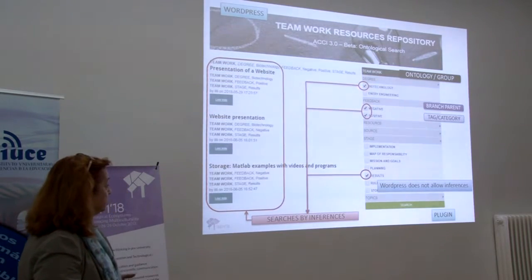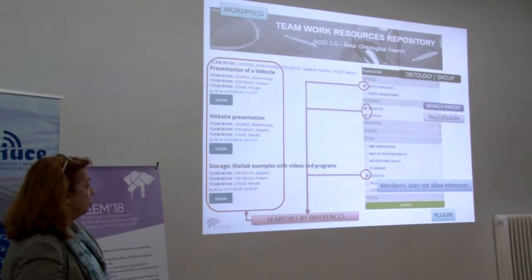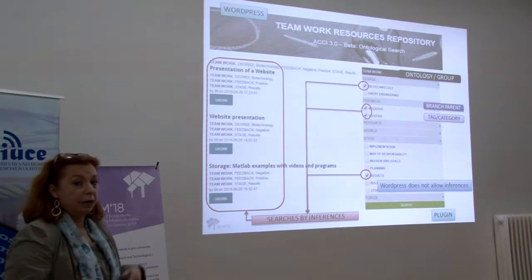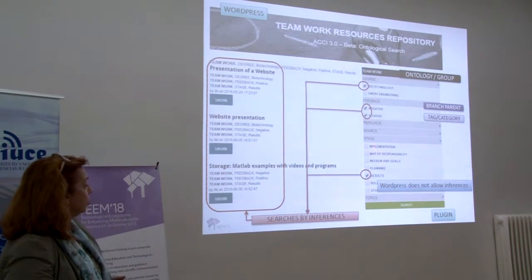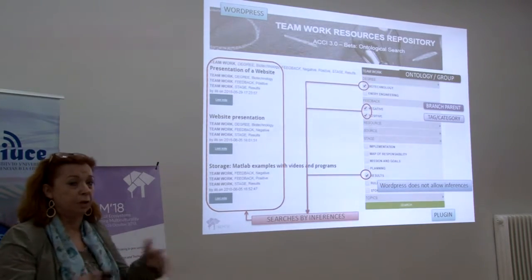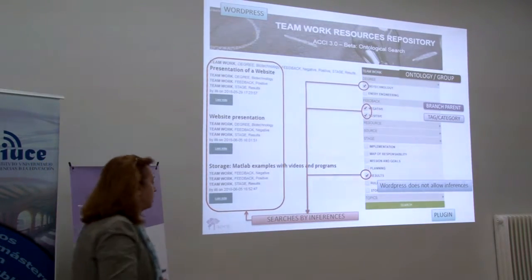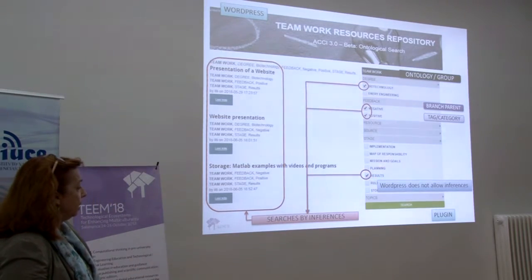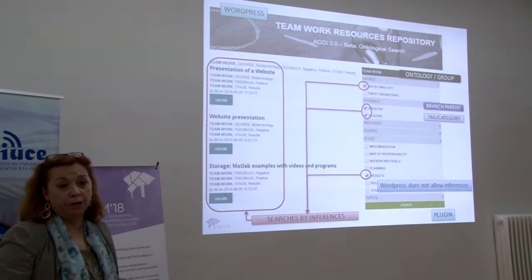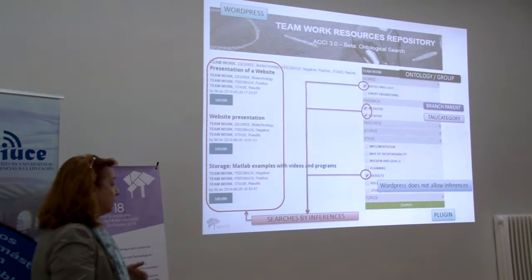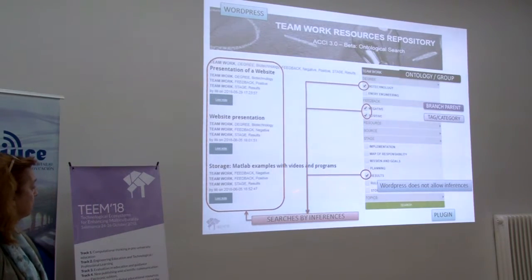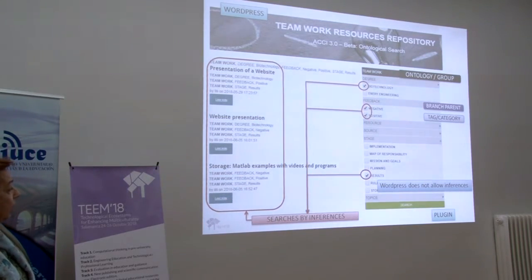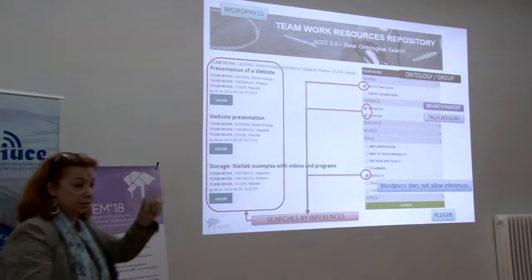For example, we can choose the degree of technology and also resources with feedback, positive and negative. We can also select stages related to the teamwork process related with results. This is included in WordPress, and WordPress is an application that does not allow inferences. So using the inferences, we obtain different results by doing all the combinations between the different tasks.